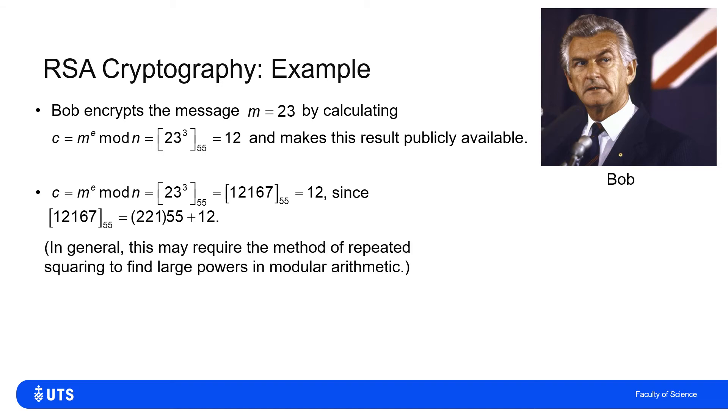In general, these might be a little bit harder to work out. The example I've picked here is probably by only having E equals 3 cubings, a little bit easy to do. Whereas obviously, if it was a much larger e, we might have to do the trick of repeated squaring that we saw in one of the previous videos. So Bob then makes the encrypted message C is 12 public.